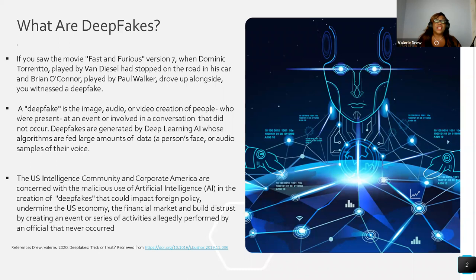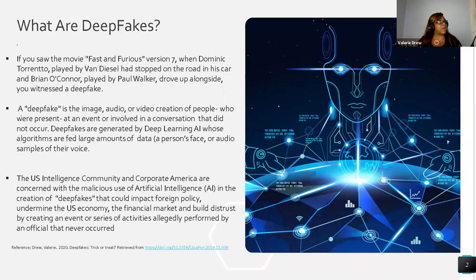What are deep fakes? If you saw the movie Forrest Gump, when Forrest actually met President Kennedy, you witnessed a deep fake. If you also saw Fast and Furious version seven, when Van Diesel drove his car along the road and Paul Walker drove up alongside him — unfortunately, that was a deep fake because Paul Walker was no longer with us. A deep fake is the image, audio, or video creation of people who are present at an event or involved in a conversation that did not occur. Deep fakes are generated by large amounts of data manipulated through AI algorithms, which sample a person's face, voice, and audio.